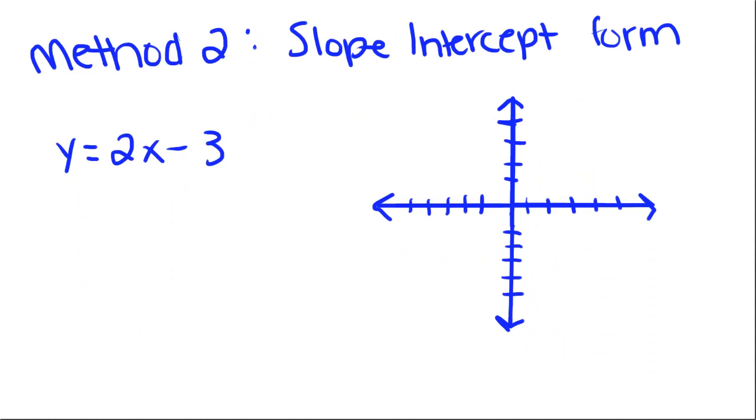Method 2 is how we're going to graph it using slope-intercept form. This is the more preferred way because it's easier and it requires less plugging in.